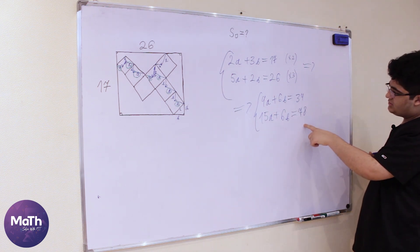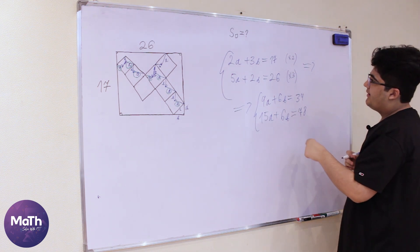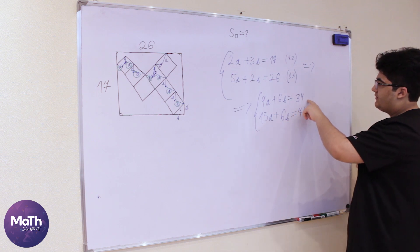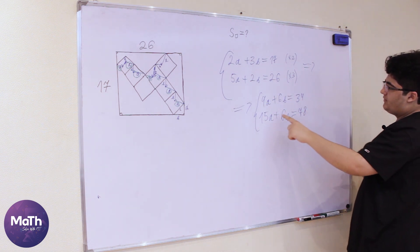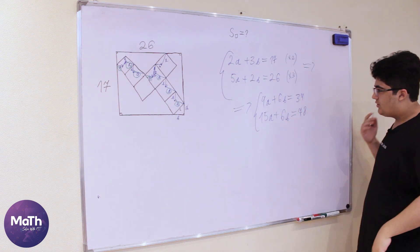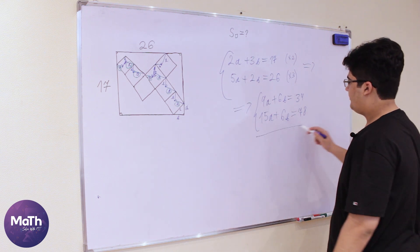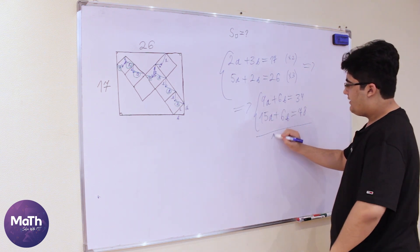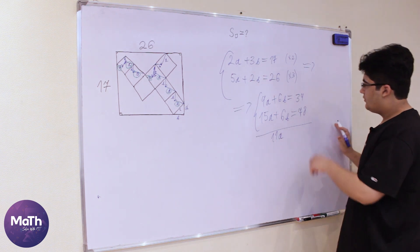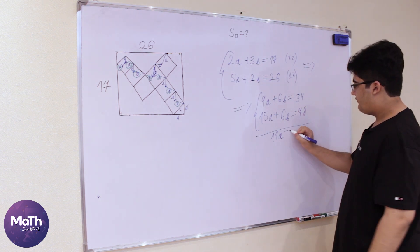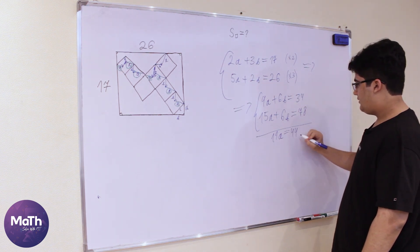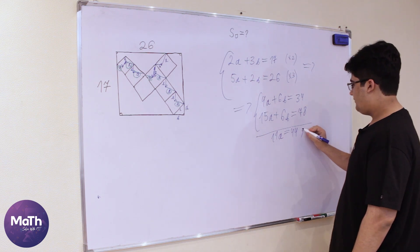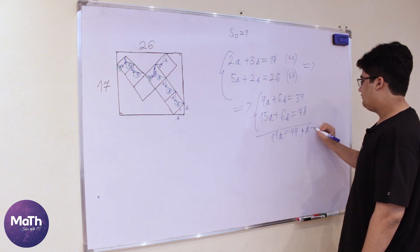Again a system of equations, so we need to subtract the first equation from the second one, so we'll have 11a equal to 44. Then a is equal to 4.